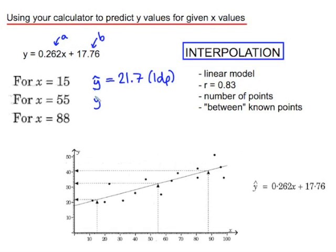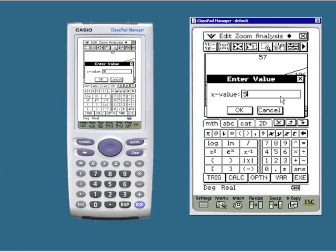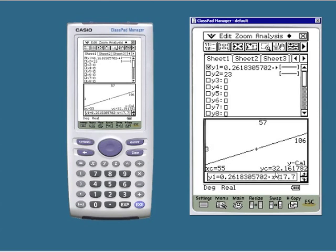We can predict y values for x values of 55 and 88. Analysis, g solve, y cal, 55, and that returns a value of 32.2.